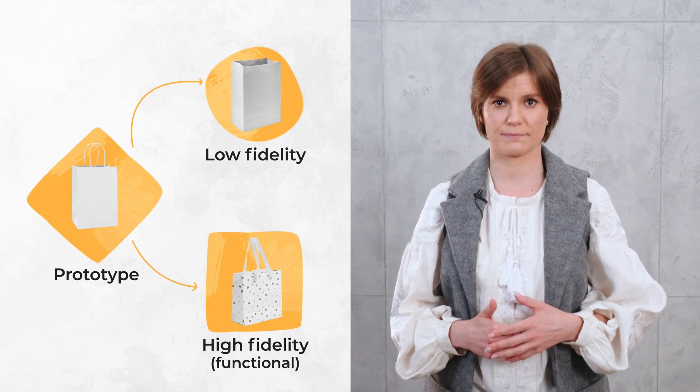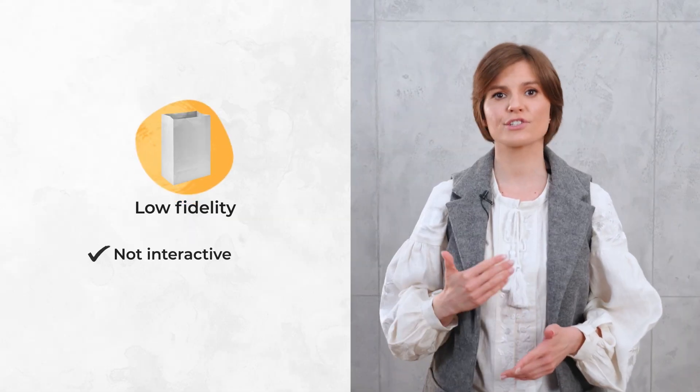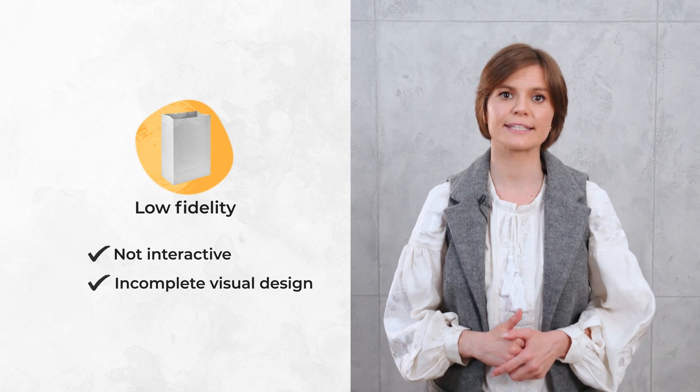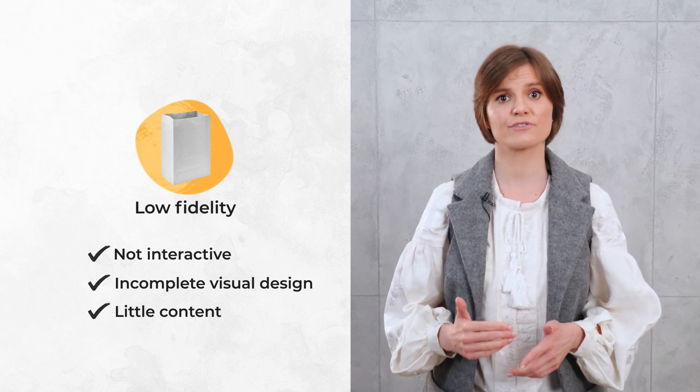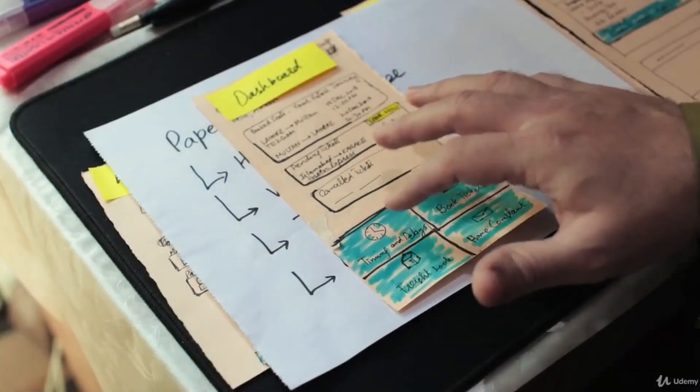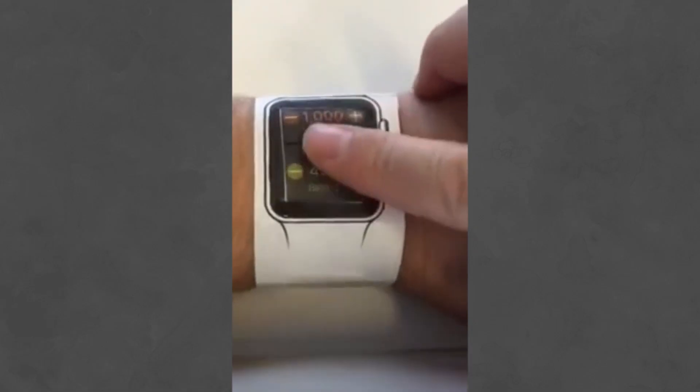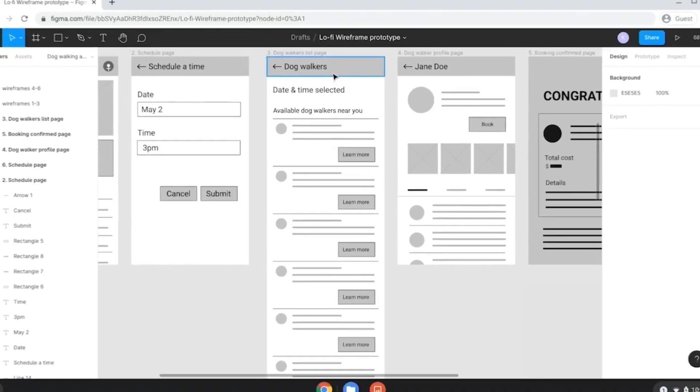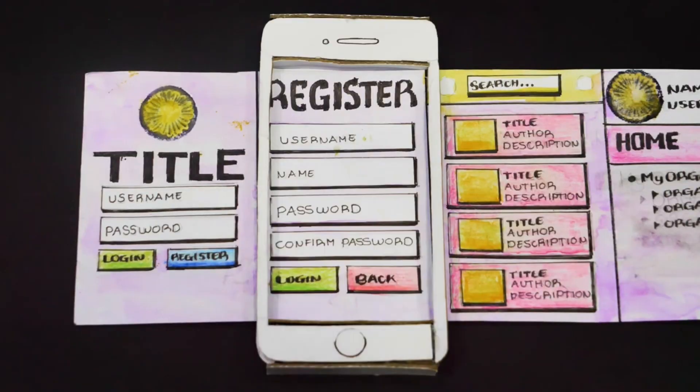Normally we divide prototypes into low and high fidelity. Sometimes high fidelity prototypes are called functional — those you can interact with. A low fidelity prototype is an artifact to communicate high-level design concepts and capture basic functionality. It's not interactive, the visual design is incomplete, and it doesn't have much content — nor does it represent the final look and feel. You can draw basic designs on sheets of paper, or get several screens with wireframes showing future sections and buttons.